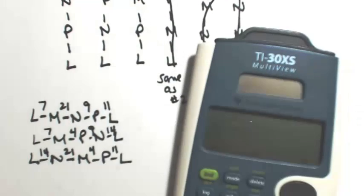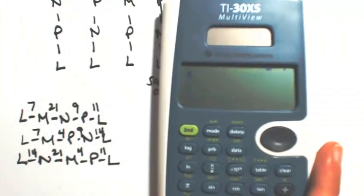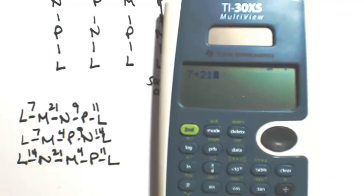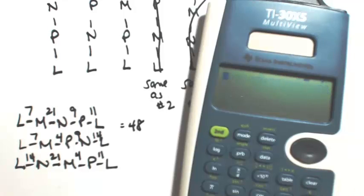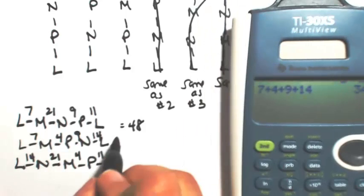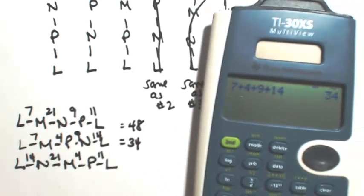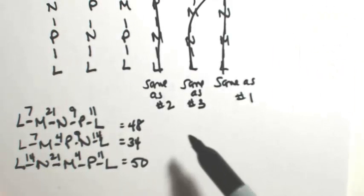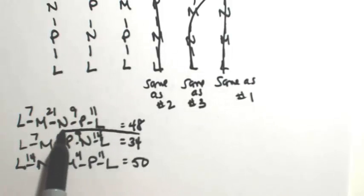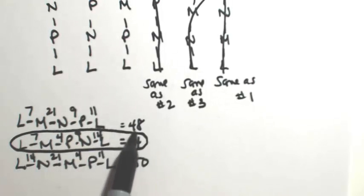I just wrote down all of those edges. What I'm going to do is just add all these together using a basic calculator. 7 plus 21 plus 9 plus 11 is 48. 7 plus 4 plus 9 plus 14 is 34. And then 14 plus 21 plus 4 plus 11 is 50. Looking at the three possibilities, the one that has the lowest cost is 34. So that will be our optimal circuit.